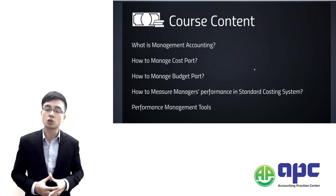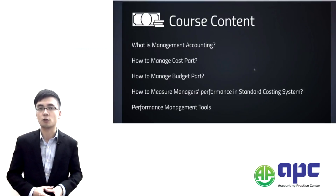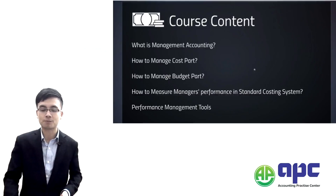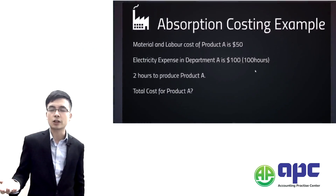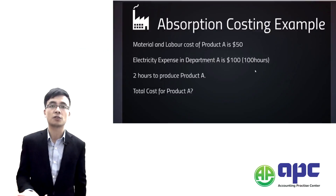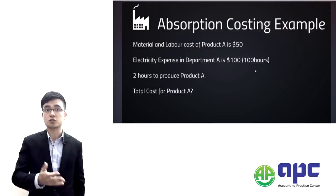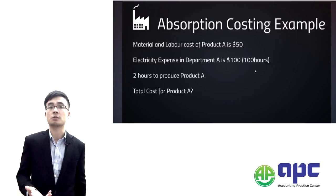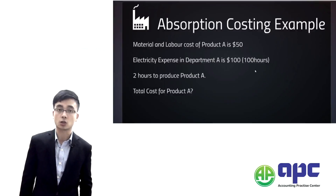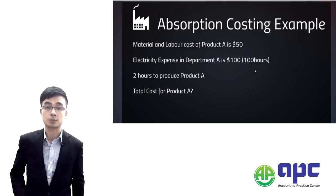Finally, we also need to look at performance management tools — for example, the balanced scorecard. Let me give you an example related to the F5 syllabus. First, let's look at the costing part. There are many ways we can manage costs within the organisation, using different costing systems or techniques to determine the cost base of different products. This example requires us to calculate the total cost for product A, specifically looking at absorption costing.